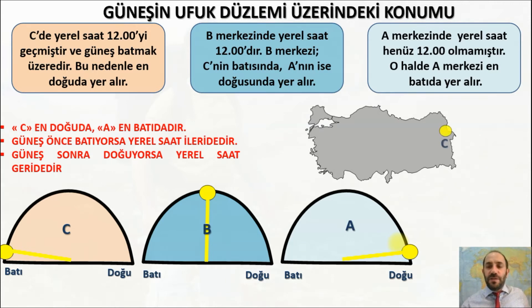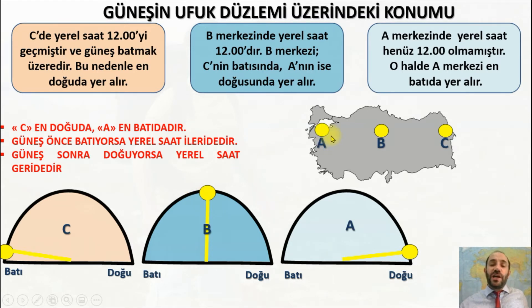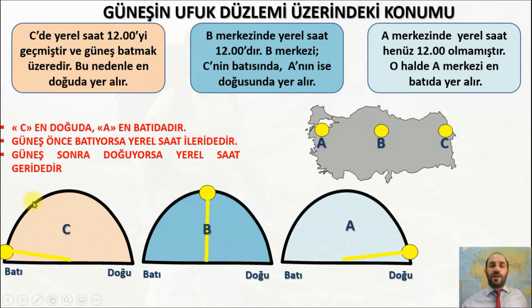Güneş doğuda önce doğduğuna göre ufuk düzleminde batmaya daha yakın olmalı. Güneş batıda daha sonra doğduğuna göre ufuk düzleminde batmaya daha uzak olmalı. Örnek: C doğuda, güneş önce doğar, önce batar, batmaya yakın. B biraz daha batıda, güneş biraz daha batmaya uzak. A daha da batıda, güneş batmaya oldukça uzak. C'de önce doğar önce batar; A'da sonra doğar sonra batar. Bunu saatin hareket yönü ile karıştırmayın; bu güneşin ufuk düzlemindeki yükselmesidir.